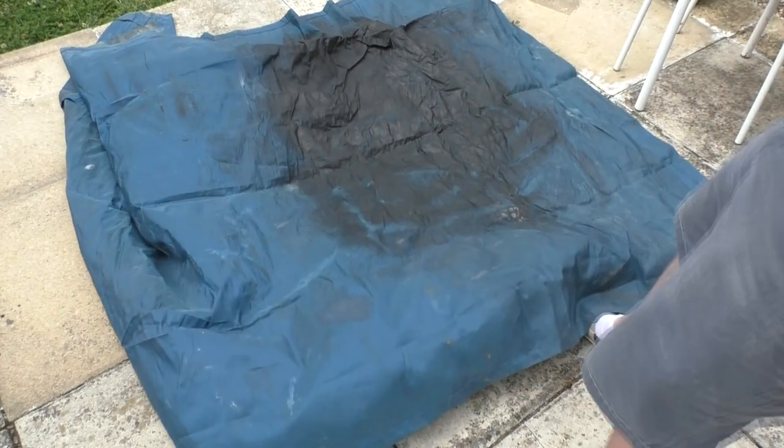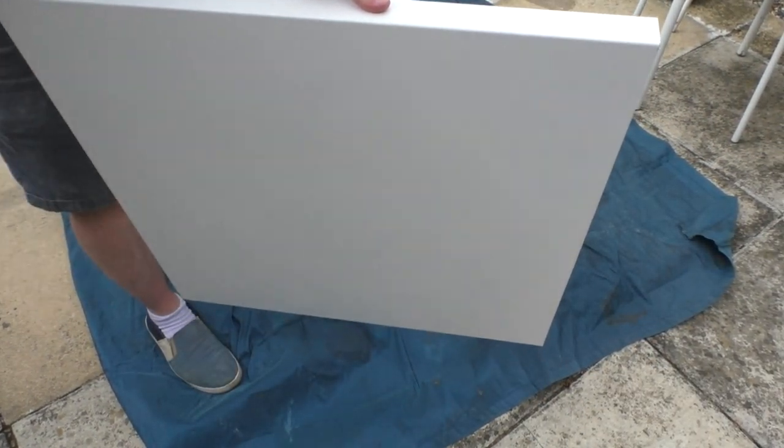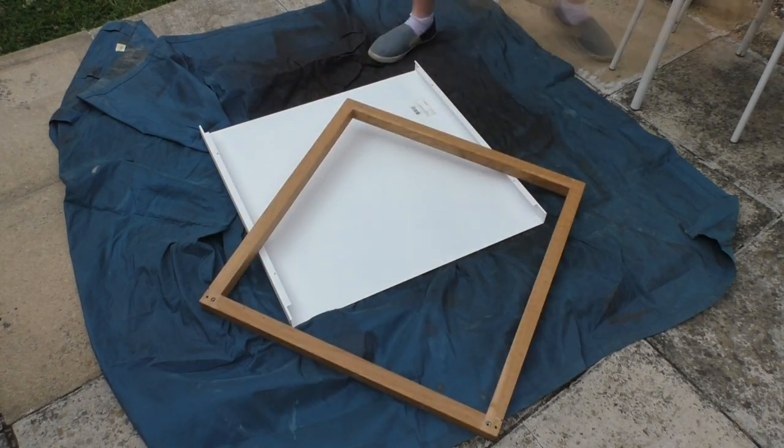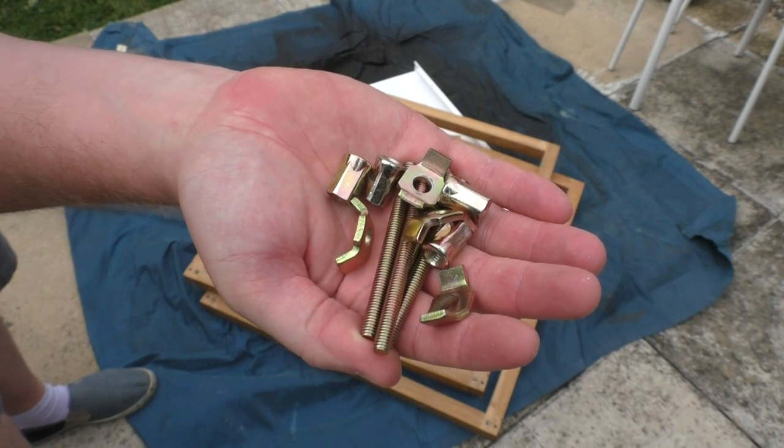The table was disassembled when it arrived. There was a metal tabletop in white, two square leg frames and two apron rails made of solid oak, and the nuts and bolts which hold the table frame together.